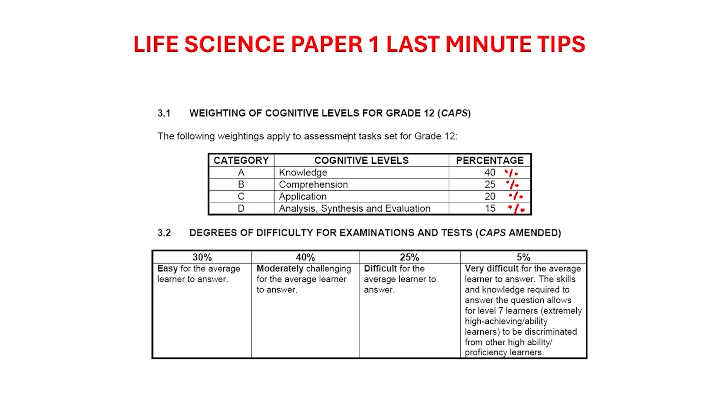All in all, 30% of the paper should be easy for the average learner—40% should be moderately challenging. So 30% would be level one and some level two questions. 40% should be moderately challenging, so this is mainly your harder level twos and level three questions. 25% will be difficult for the average learner, probably the harder level threes and a few level fours or the short essay questions. And very difficult will be mainly your four plus mark questions.